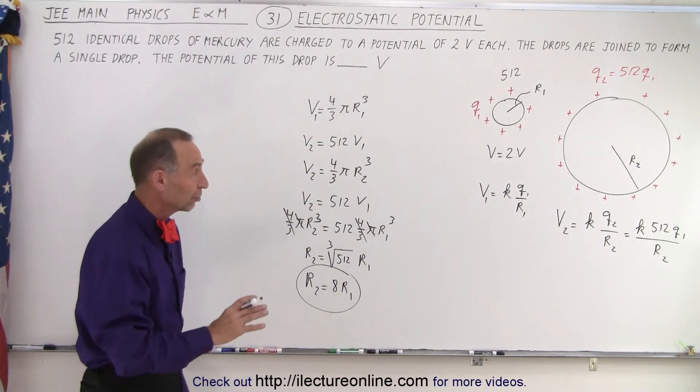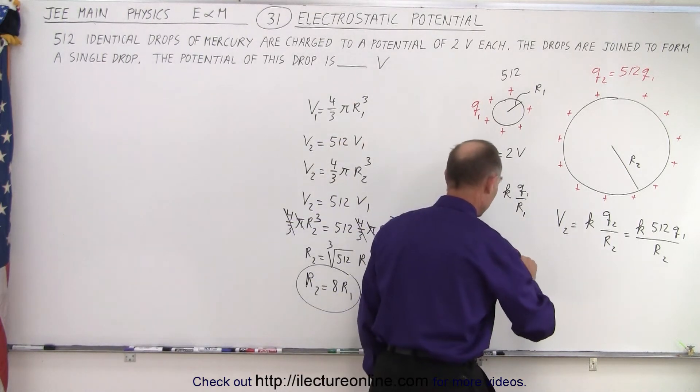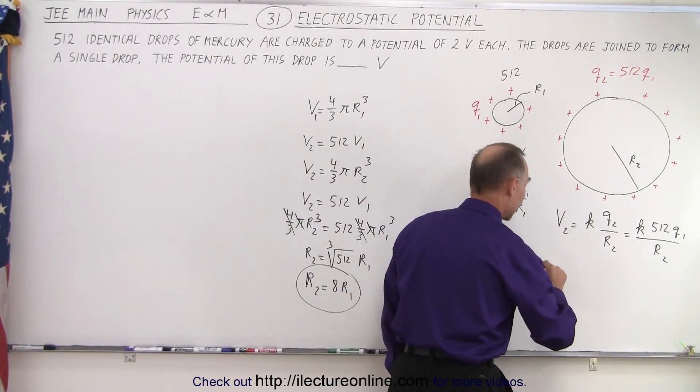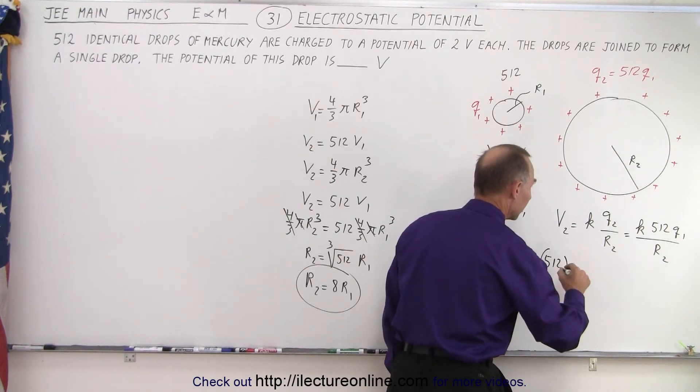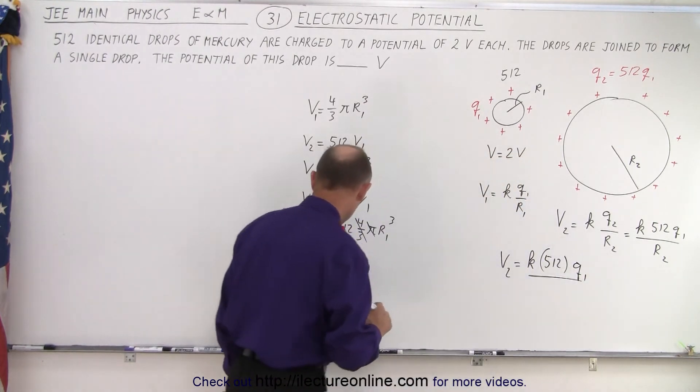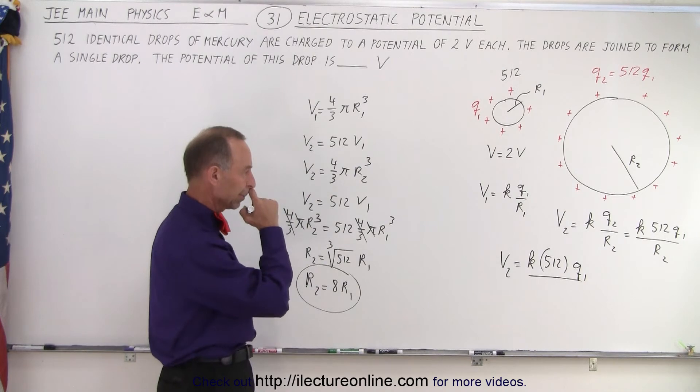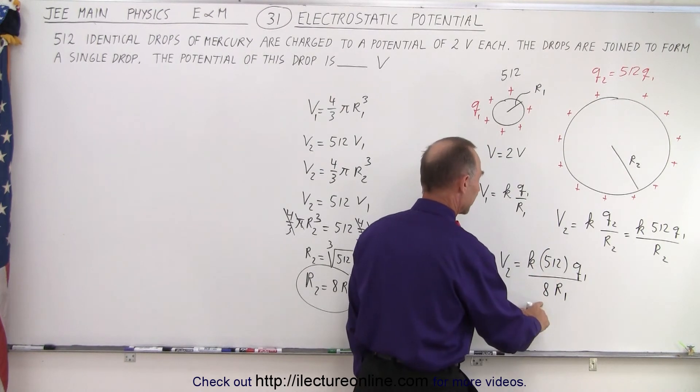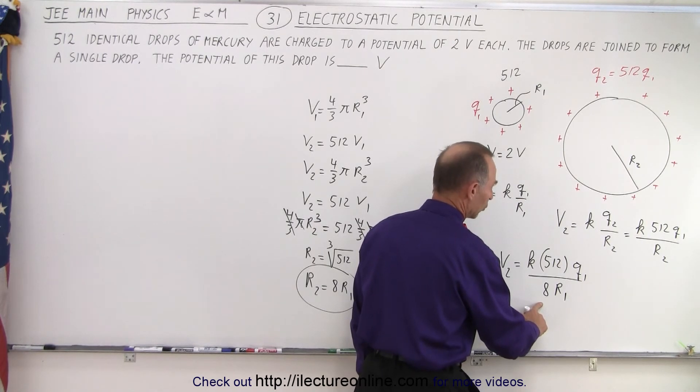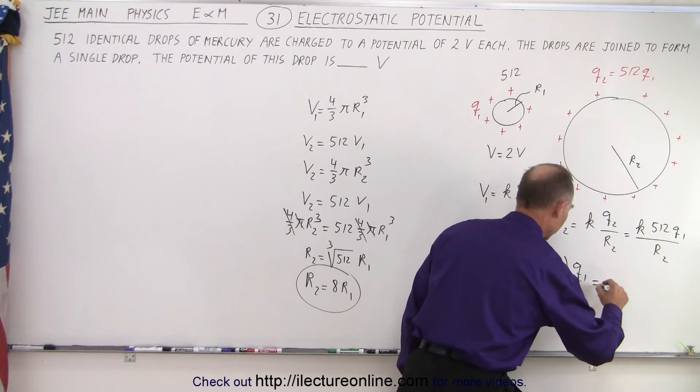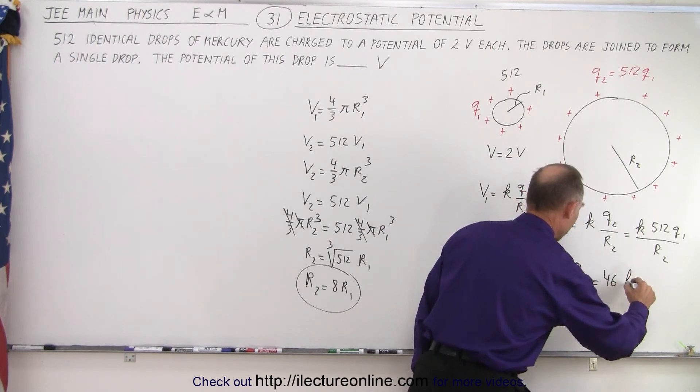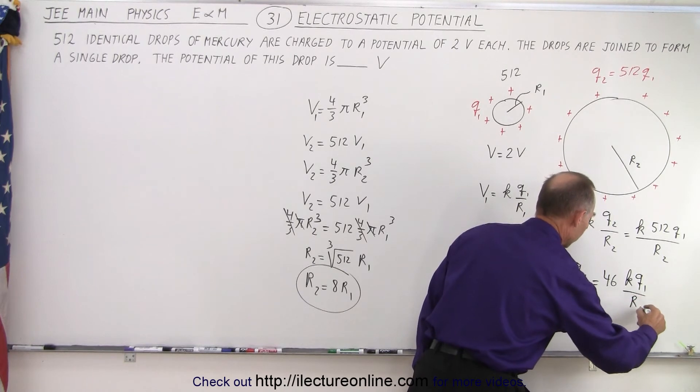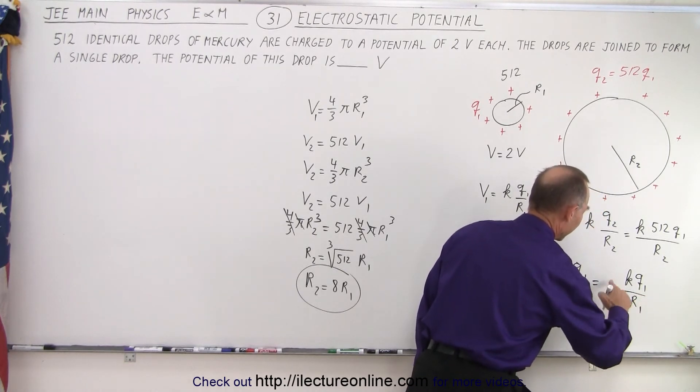Okay, so now that we have that relationship, we can plug that in. We can say that V2 is equal to K times 512 times Q1 divided by R2, and R2 is 8 times R1. So what's 512 divided by 8? That would be equal to 64. So this is equal to 64 KQ1 divided by R1.